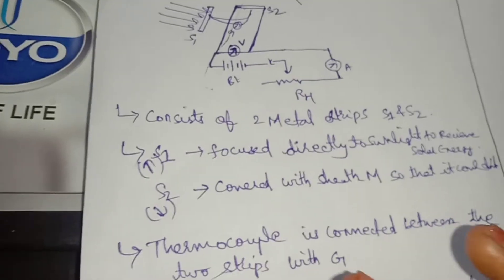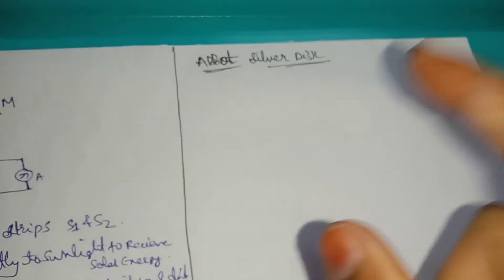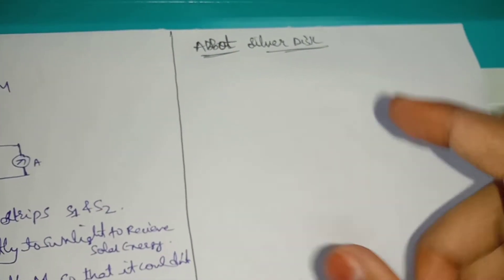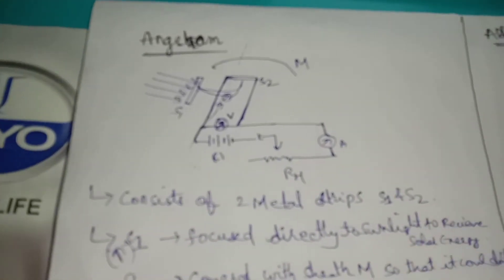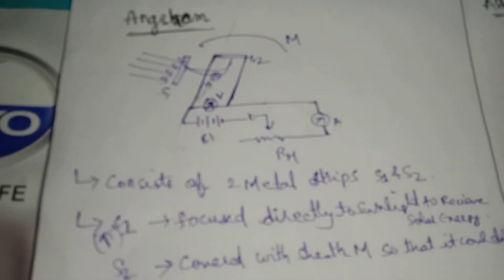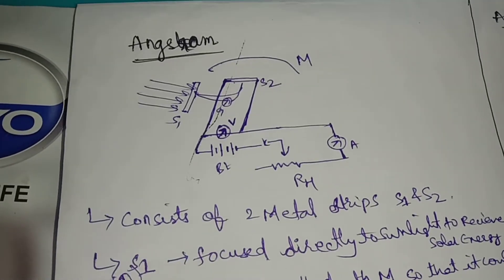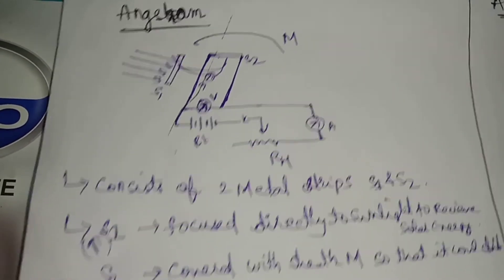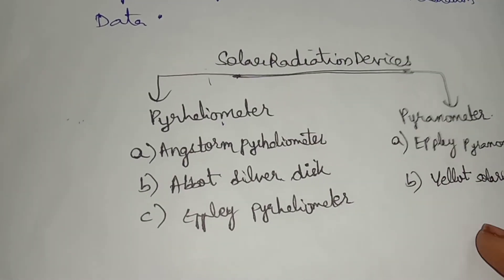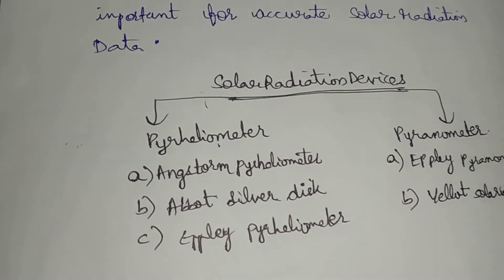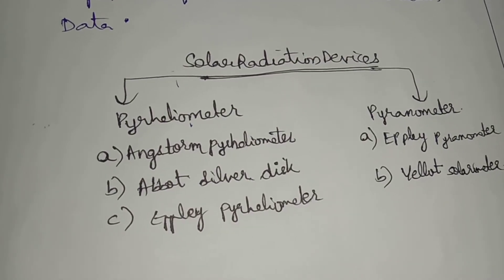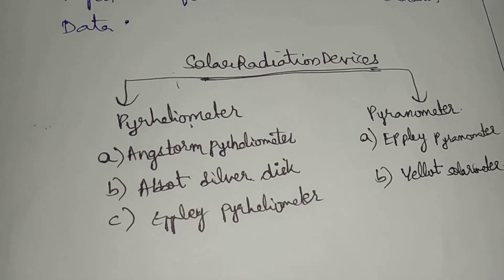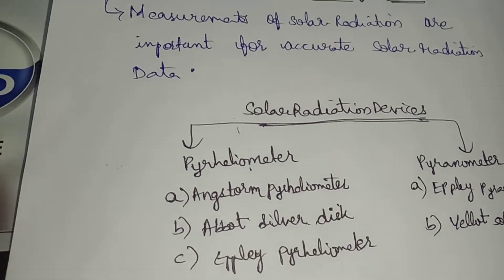Similarly, AB and the silver disc also appear in the diagram. The labeled components include: battery B, plug K, rheostat RH, ammeter M, sheath, and strips S1 and S2. This is one of the easier topics in measuring devices, though it has a lot of information which can make it hard to understand.